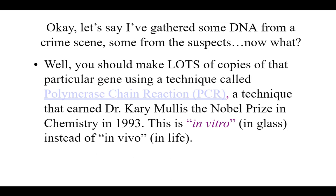We're using the story of a crime scene analysis to think about how this would work. There was this crime — a painting got stolen — and we gathered some DNA from the crime scene and from a bunch of suspects. Frequently at a crime scene you may not get very much DNA, so the first thing you want to do is make as many copies of that genetic code as you can. This is also true if you get a little bit of DNA out of a fossil — you're not going to get very much. So anytime you have a really limited supply, the first thing you want to do is make lots of copies of that gene.